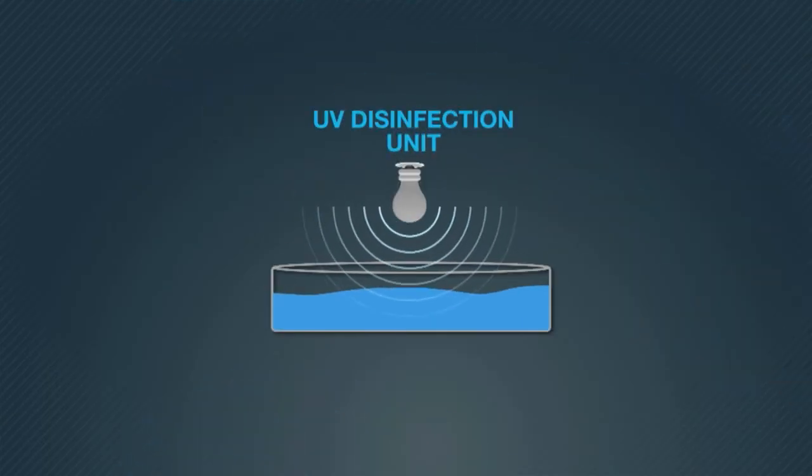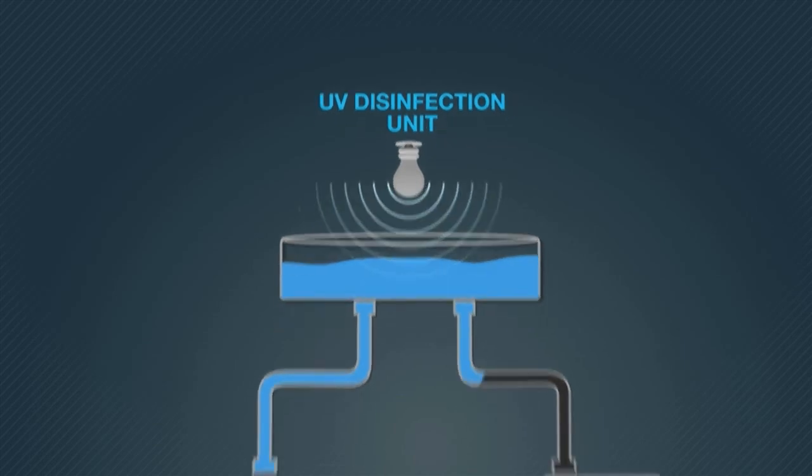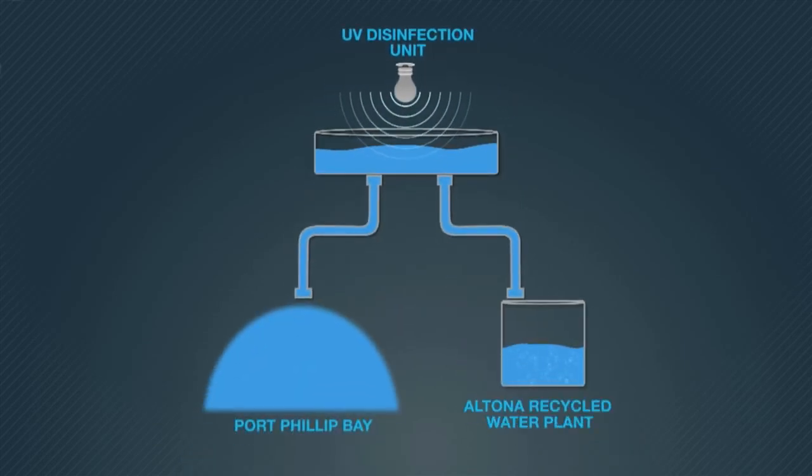Before the water is pumped into Port Phillip Bay, the UV disinfection units kill off any remaining bacteria, making it safe for the community.